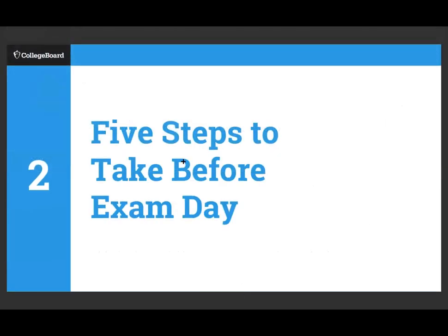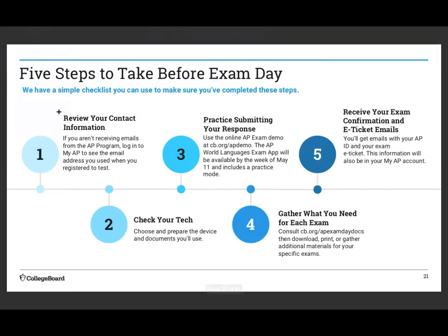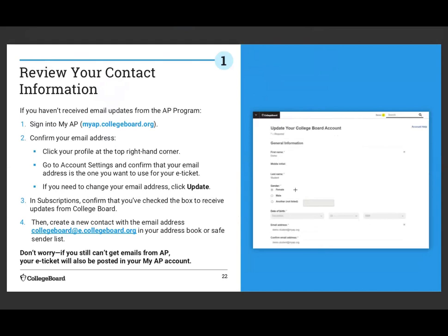Before exam day, here are five steps to take: Review your contact info and make sure you're getting emails from the AP program. Check your tech — choose and prepare your device and make sure you can use it for the AP exam. Practice submitting a response using the collegecb.org AP demo, which I'll show you how to do. Gather what you need — for our exam you just need your notebook or textbook if you have it. Finally, receive your exam confirmation and e-ticket emails, which you should get 48 hours before the exam, so likely on Sunday.